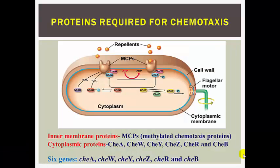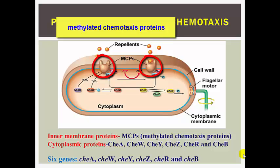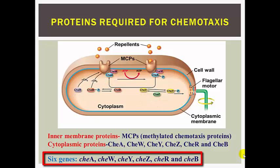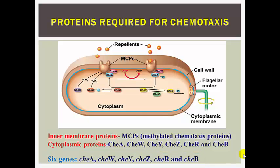Chemotaxis employs complex regulatory circuits involving proteins located in the cytoplasmic and inner membrane. Proteins in the inner membrane include methylated chemotaxis proteins, or MCPs, while proteins in the cytoplasm include CheA, CheW, CheY, CheZ, CheR, and CheB. These proteins are encoded by genes cheA, cheW, cheY, cheZ, cheR, and cheB. Deletion of any of the six che genes prevents chemotaxis without affecting motility — the cells will not be able to detect a concentration gradient.